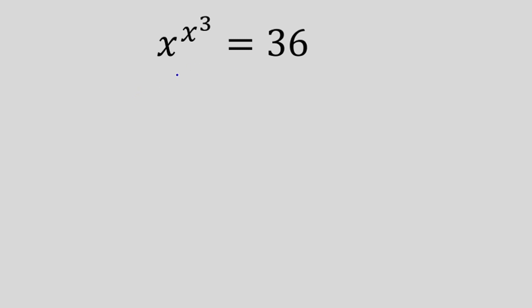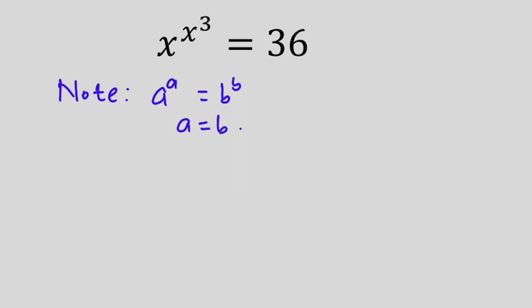Hello everyone. In this video we have this interesting problem: x to the power x to the third power is equal to 36, and we have to find the value of x. Before we start, let's note this principle: if we have a to the power a is equal to b to the power b, then we can say that a is equal to b. We are going to be applying this interesting principle to our problem here.